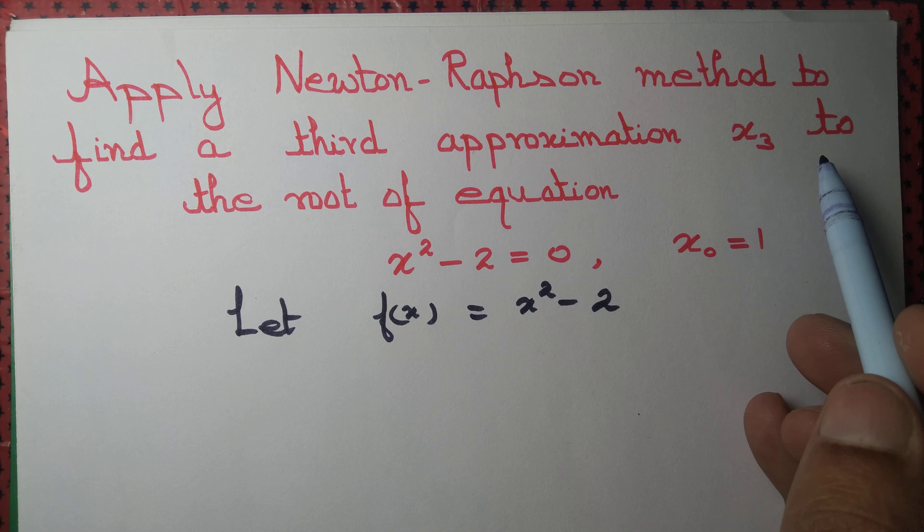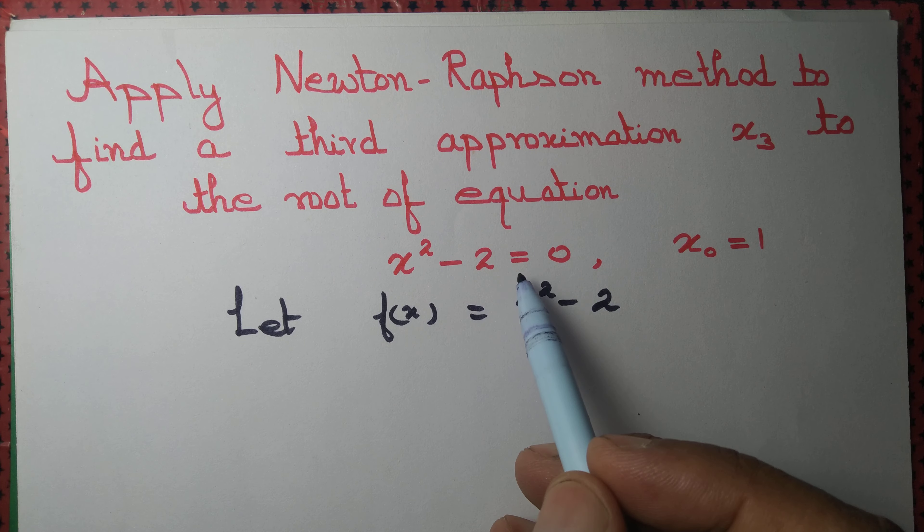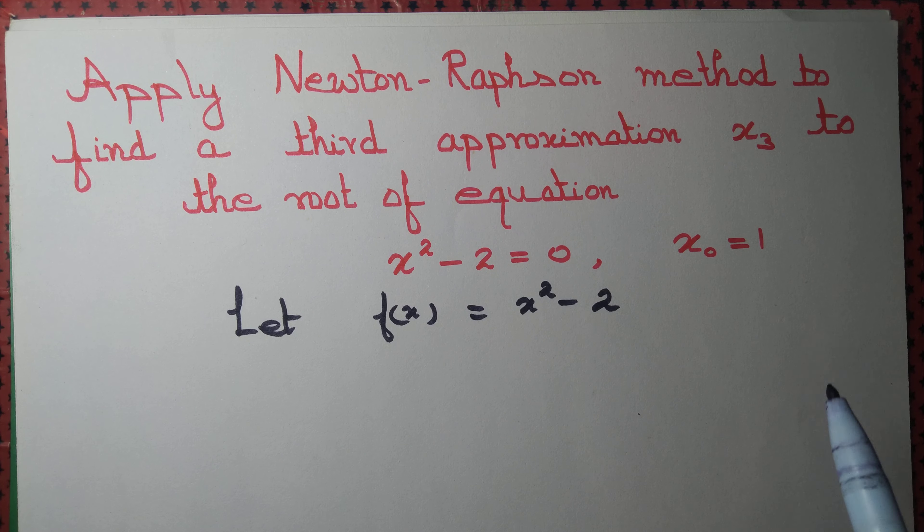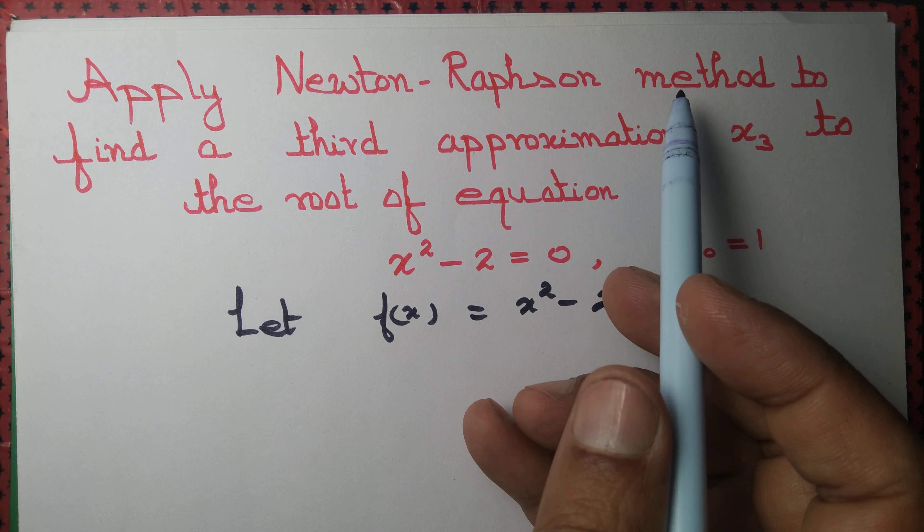Find a third approximation x₃ to the root of the equation x² - 2 = 0, starting with x₀ = 1, applying the Newton-Raphson method.